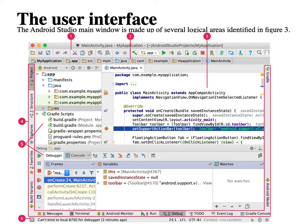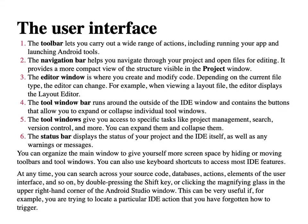There is also a status bar that displays status messages and warning messages from your IDE. The toolbar lets you carry out a wide range of actions, including running your application and launching Android tools. There is a green play button icon — the run button — so you can run your application by clicking that button. Many different icons are available for performing various actions.